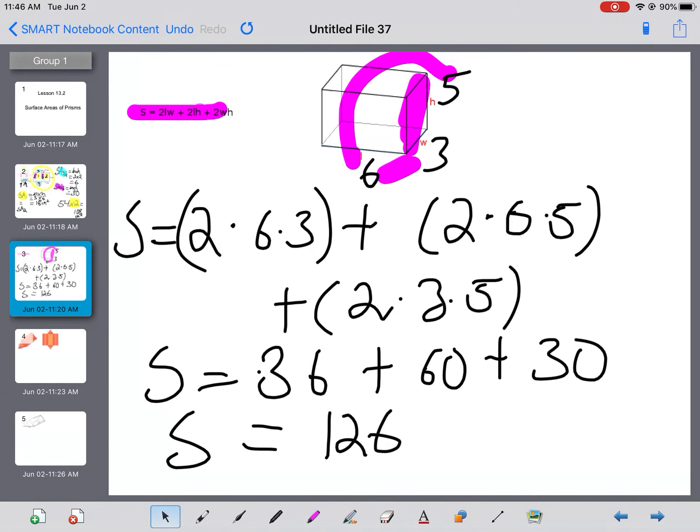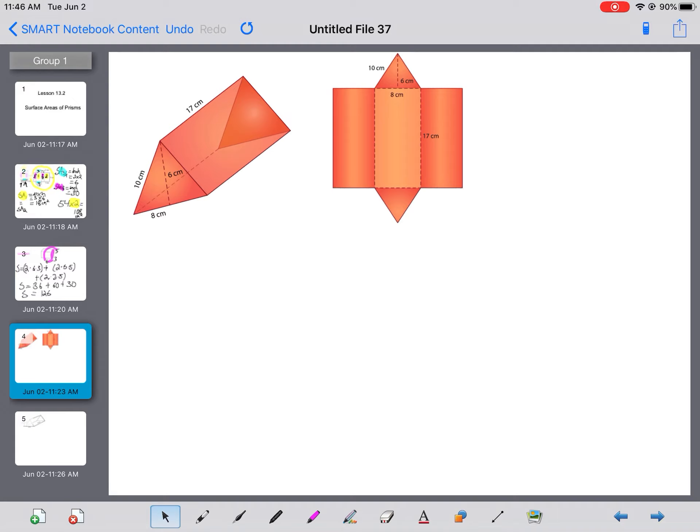Now let's move on to triangular prisms. Once again, I have an example where I've given you the triangular prism. I've also given you the net so you can see it unfolded because it's really good to be able to visualize where it comes from.